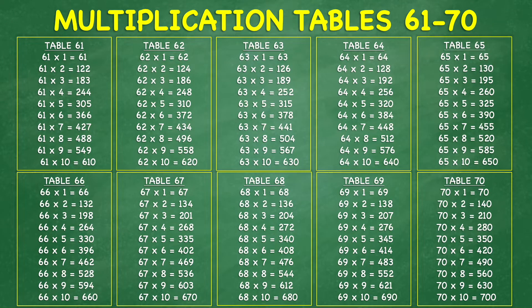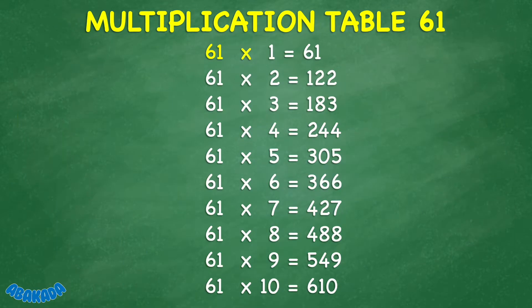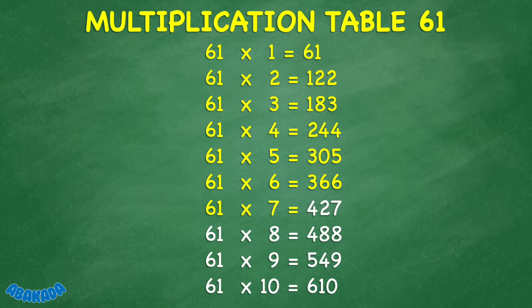Multiplication Table 61 to 70. 61 times 1 equals 61. 61 times 2 equals 122. 61 times 3 equals 183. 61 times 4 equals 244. 61 times 5 equals 305. 61 times 6 equals 366. 61 times 7 equals 427.